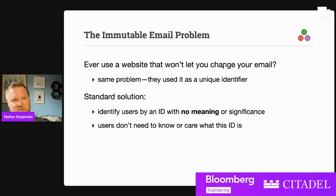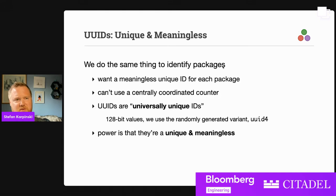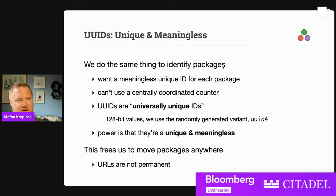This struck me as a very similar problem. We want a meaningless ID for each package, but you can't centrally coordinate this because the system could be federated — I could generate a package locally and never publish it or keep it private, and I still want it to be uniquely identified. The obvious solution is UUIDs — universally unique IDs. They're 128-bit values; we use the randomly generated variant. The useful thing about them is that they're meaningless, and that frees us to move packages anywhere. The URLs aren't permanent, and no one cares about what the UUID for the package is. So even if it changes locations or owners, the UUID can be the same because it doesn't mean anything.